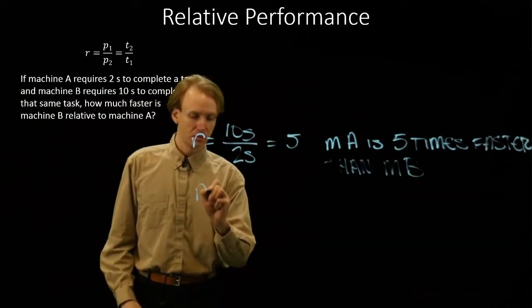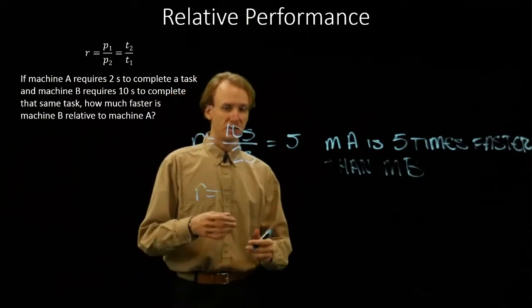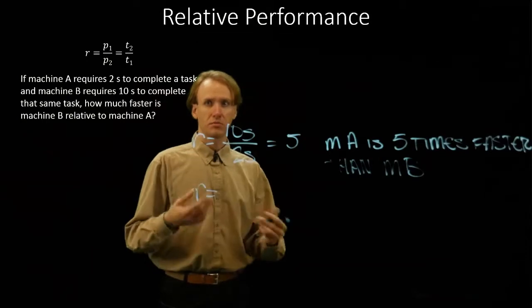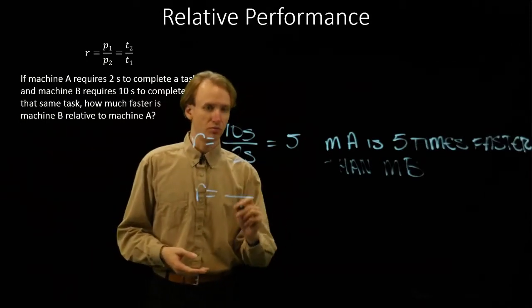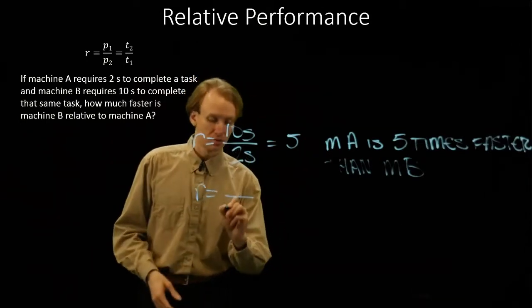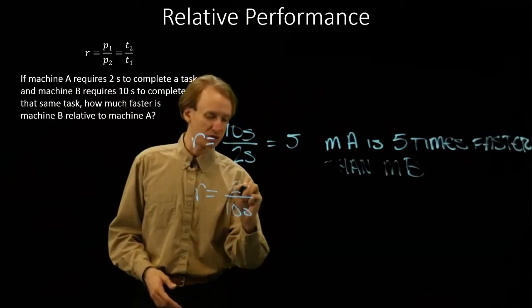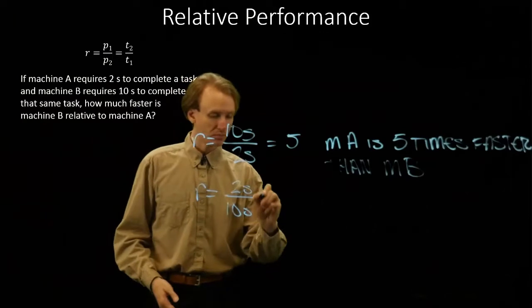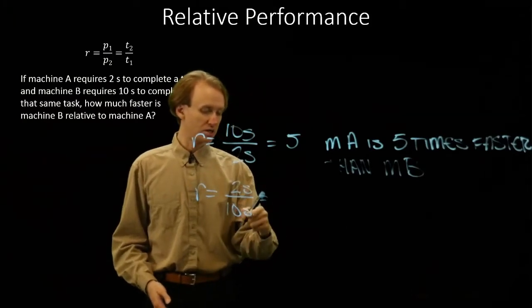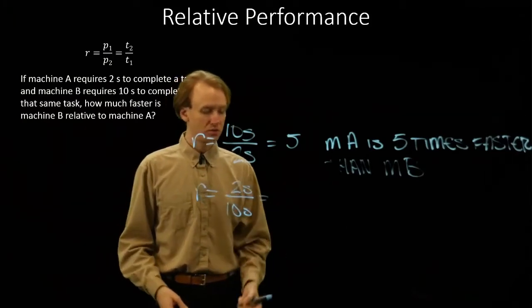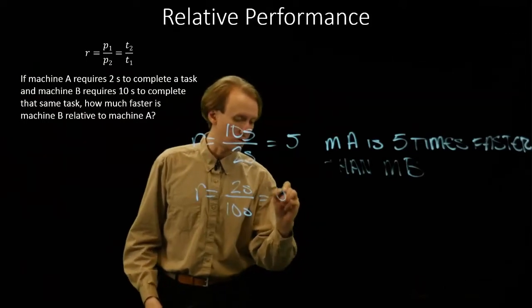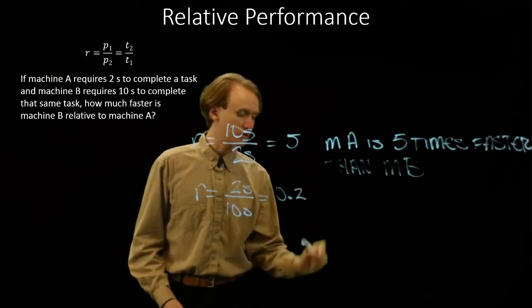So machine B takes ten seconds. So I'll put my ten seconds on the bottom and I'll put my two seconds on the top. Again, my seconds will cancel. Two divided by ten gives me one-fifth or 0.2.